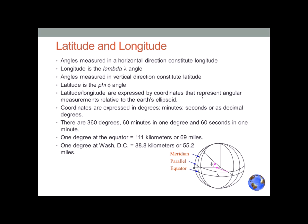There are 360 degrees, 60 minutes in one degree, and 60 seconds in one minute — that's how we define latitude and longitude in degrees, minutes, and seconds. One degree of longitude at the equator equals 111 kilometers or 69 miles. By the time you get to Washington DC, one degree of latitude is 88.8 kilometers or 55.2 miles, because the meridians converge at the pole.